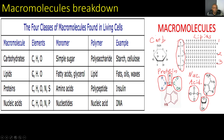Moving on to lipids: they're made of carbon, hydrogen, and oxygen. The monomers are fatty acids and glycerol, and the polymer is a lipid. Examples are fats, oils, waxes, and steroids. Here's our lipid structure — notice the glycerol right here, and then the three fatty acid chains.